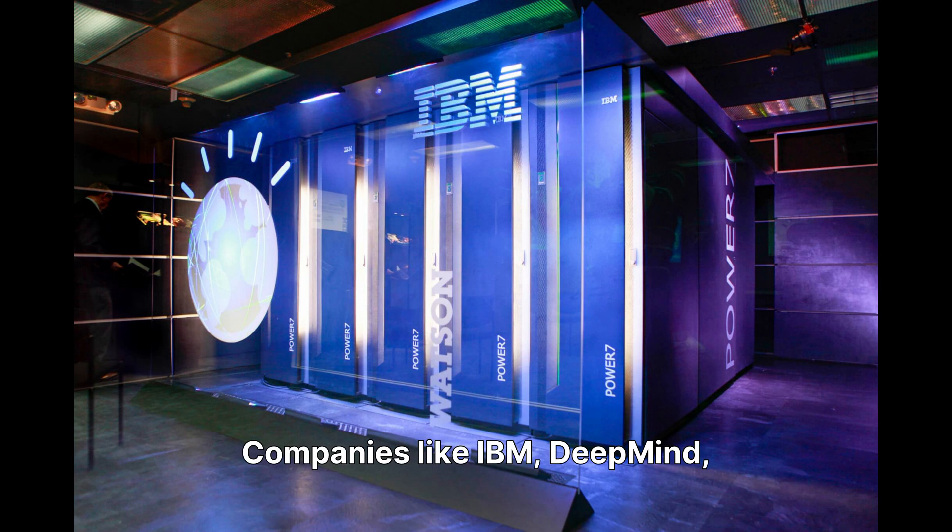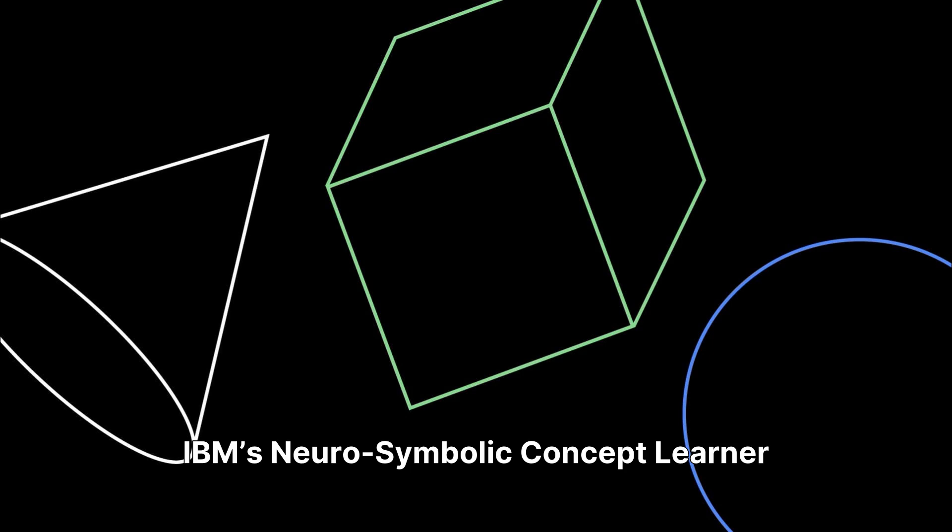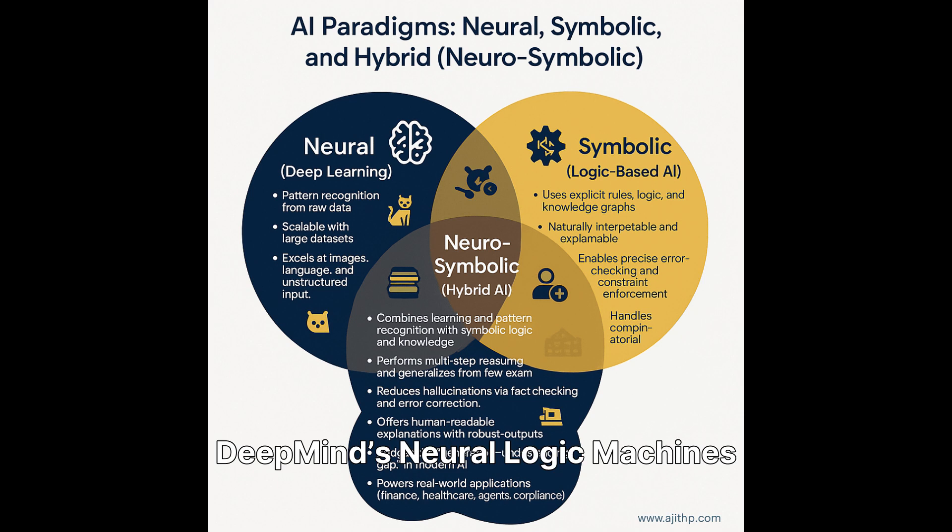Companies like IBM, DeepMind, and MIT-IBM Watson Lab lead this research. IBM's Neurosymbolic Concept Learner integrates visual perception with symbolic reasoning for complex visual questions without massive data. DeepMind's neurologic machines and graph neural networks also embody neurosymbolic principles.